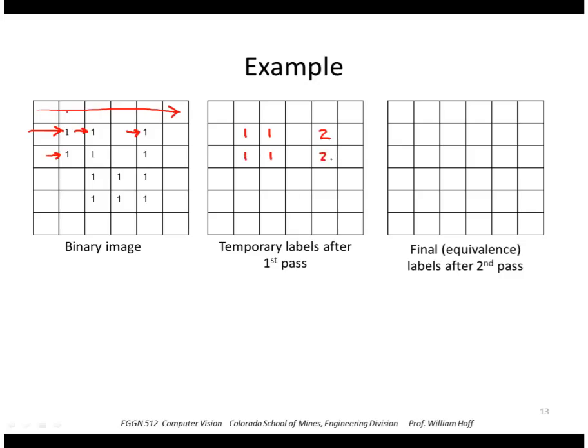Coming on the next row, I get a 1 here, a 1 there. And here's the case now where I have a neighbor above and to the left. I'll use the label above, which is a 2, but then record the equivalence. That equivalence class 1 is actually consisting of temporary labels 1 and 2.